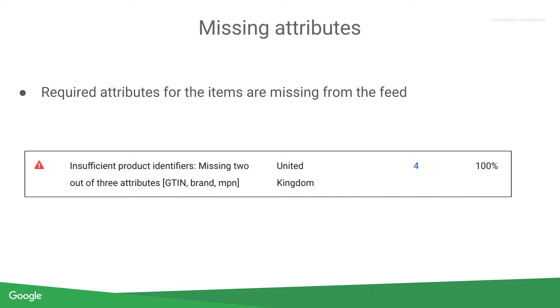Depending on your products, this could be anything from not adding unique product identifiers like MPN, GTIN, and Brand, to not adding the color of the products in your feed.